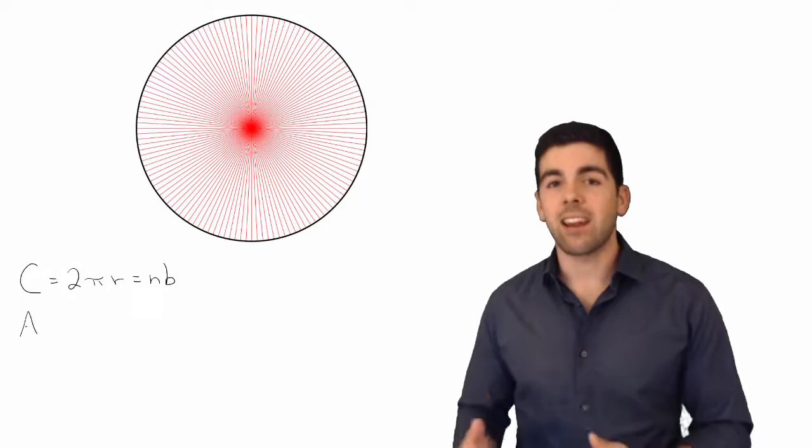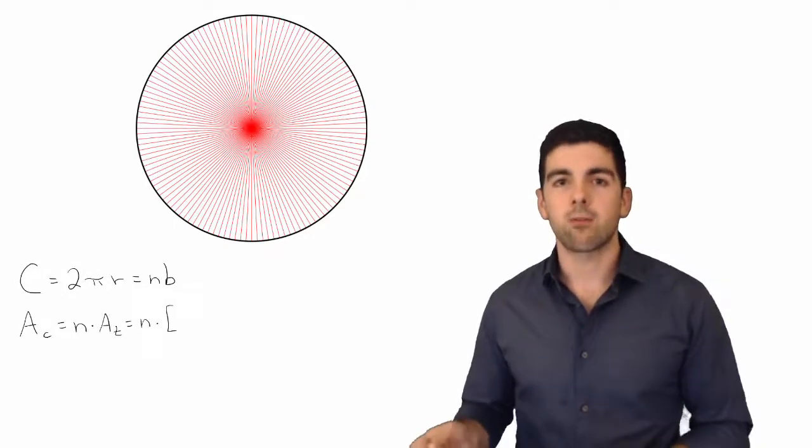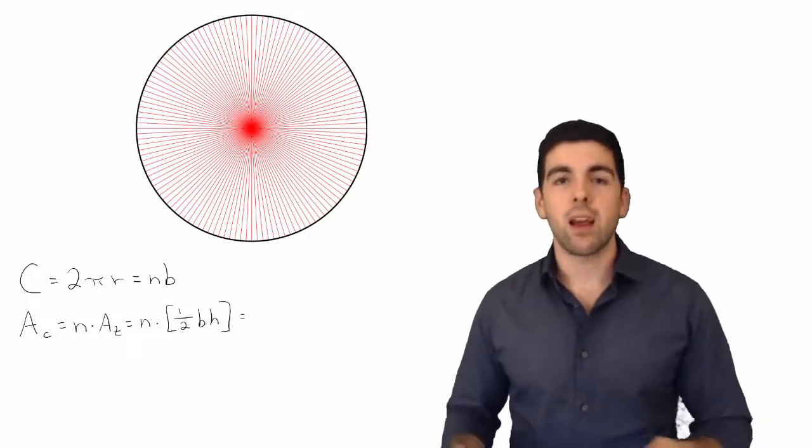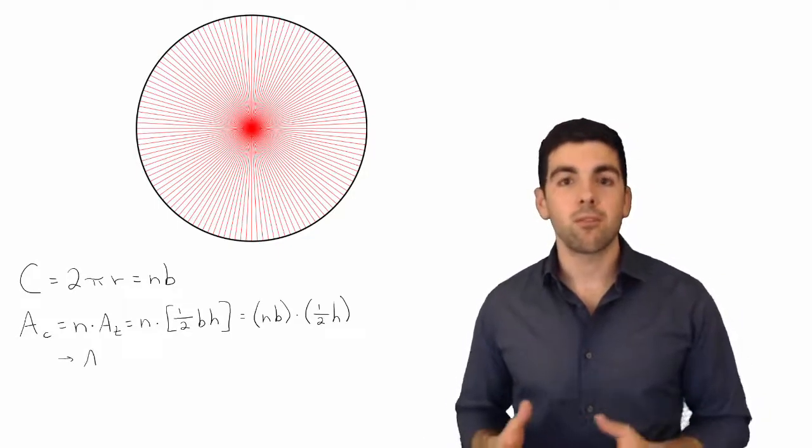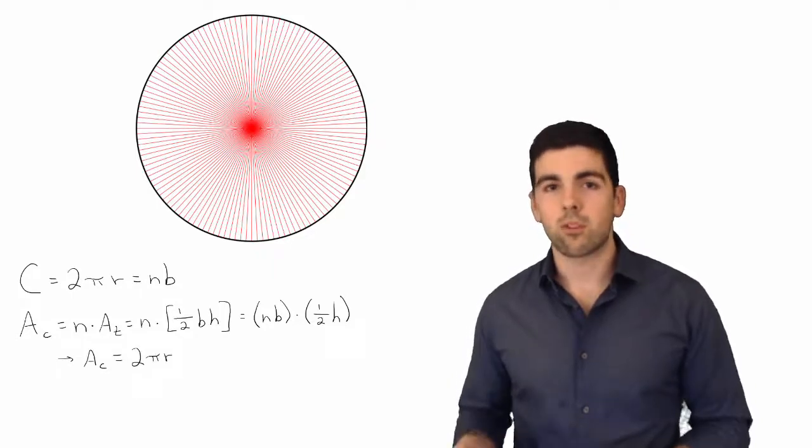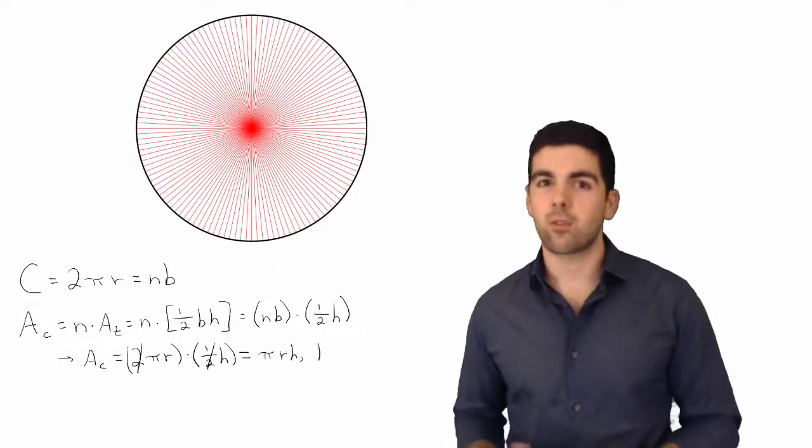In that case we can take the area of the total number of triangles and relate that to the area of the circle. So now we can combine these two equations to come up with a final value for the equation of a circle with respect to the radius. And that is where we get A for the area of a circle is equal to πr².